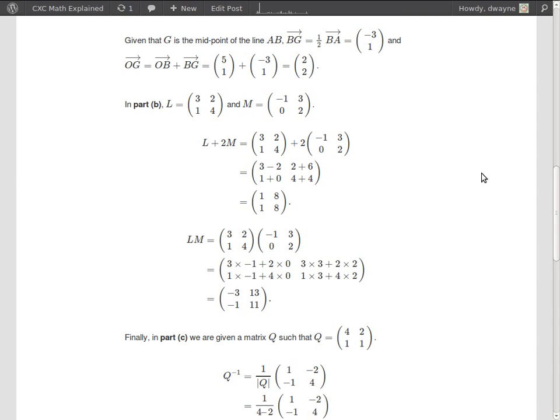L and M are two matrices where L is this 2x2 matrix 3, 2, 1, 4 and M is this 2x2 matrix negative 1, 3, 0, 2. We want to calculate L plus 2M and we want to calculate the product of L and M.